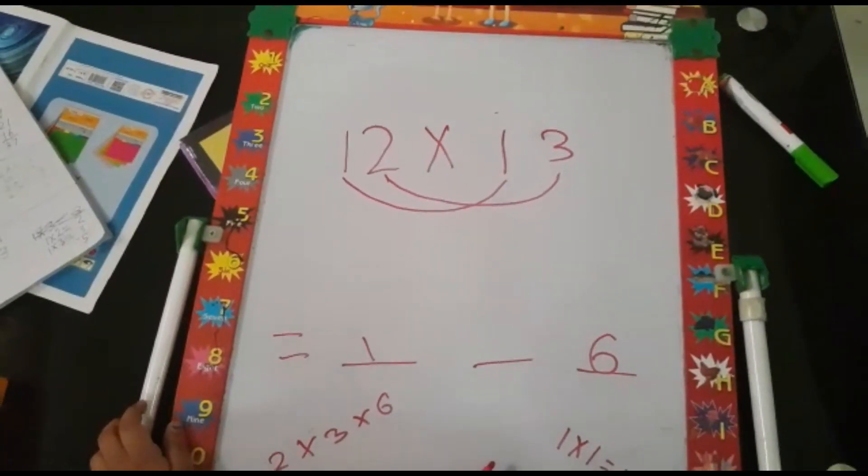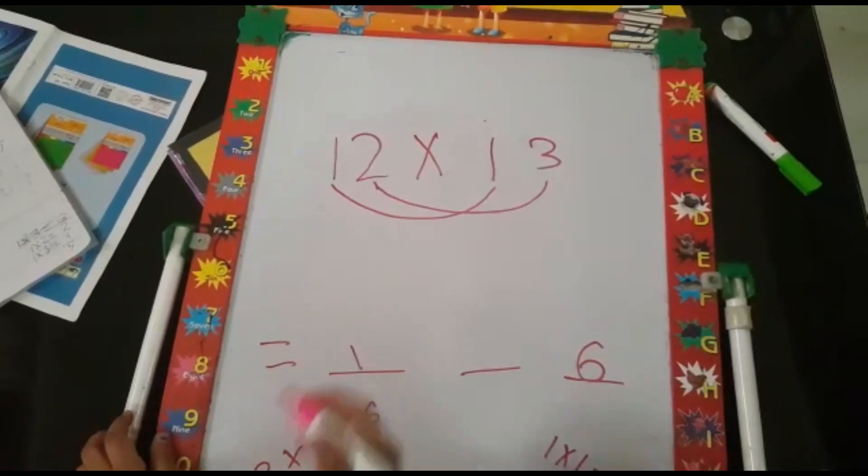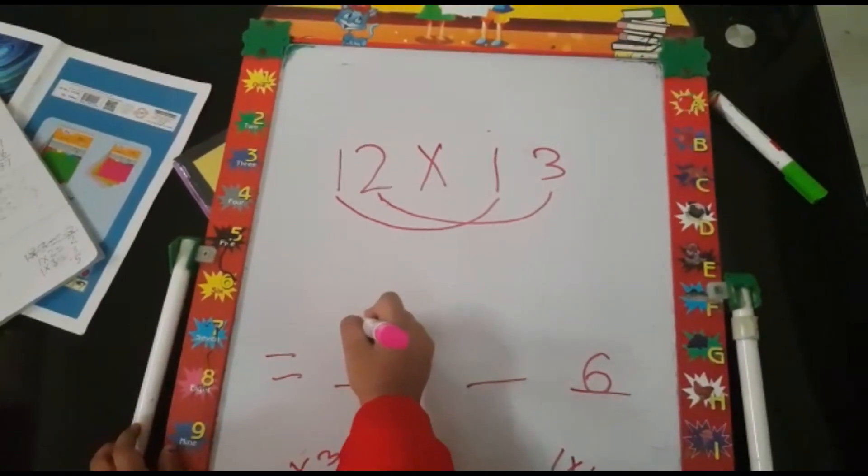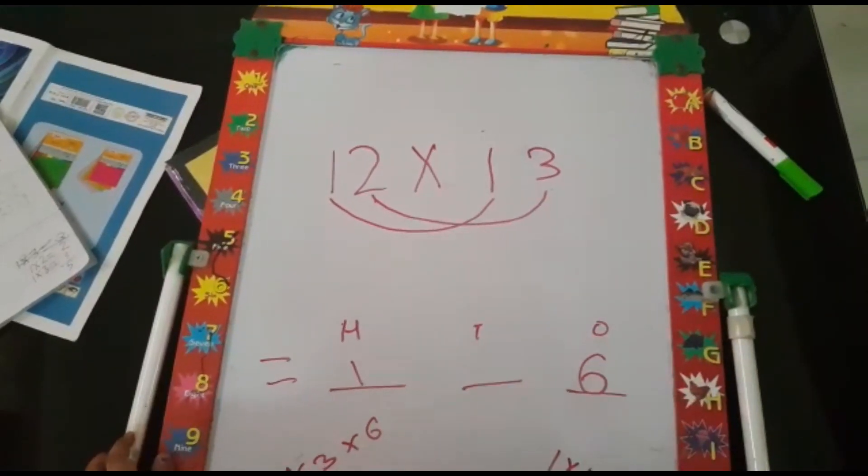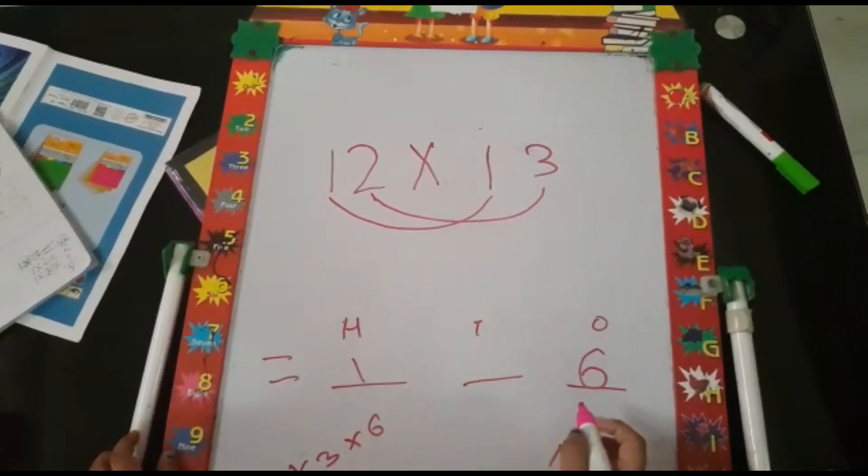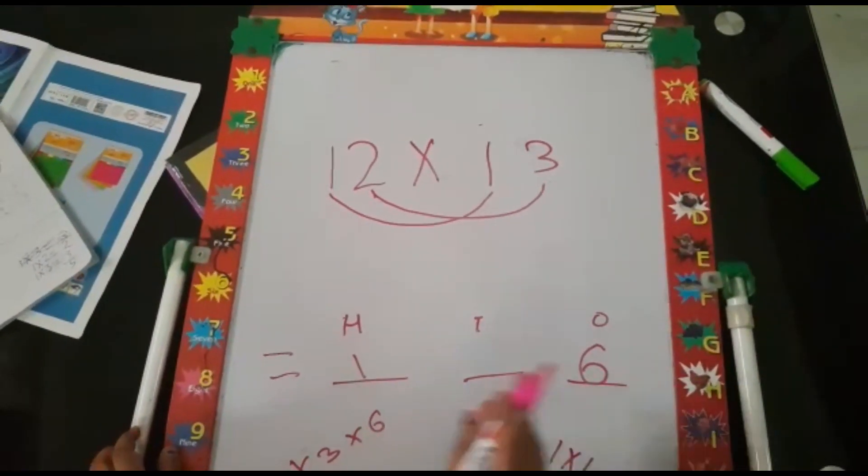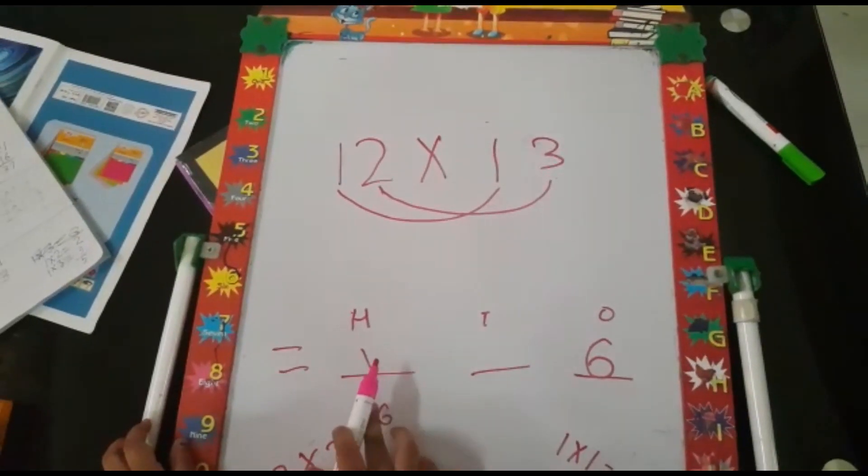So here we have got our answer in 1s place and 100s place. 2 into 3 is 6. That is 6 at 1s place in the answer and 1 multiplied by 1.